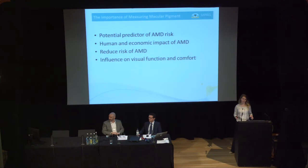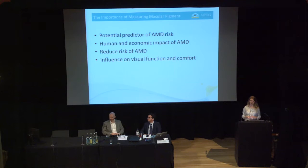So why should we measure macular pigment? As we've discussed, it could be a potential predictor for risk of AMD. With the human and economic impact of AMD in the world, which will be increasing with increasing life expectancy, why not be able to reduce somebody's risk of this disease? Also, there's an influence on visual function and visual comfort from macular pigment. Studies have shown that vision under low light conditions and glare conditions have improved with augmentation of macular pigment.